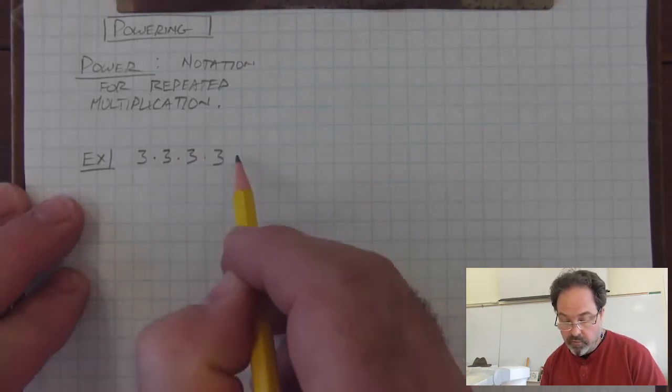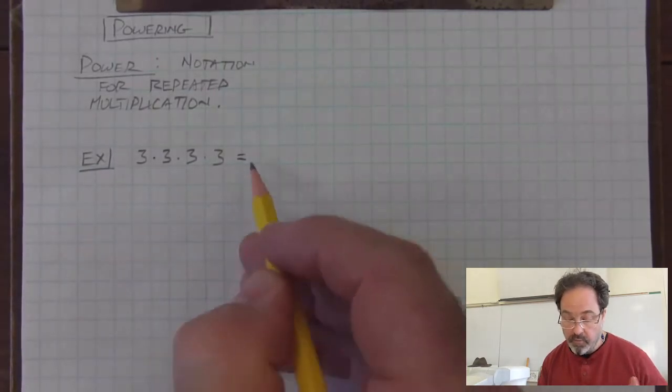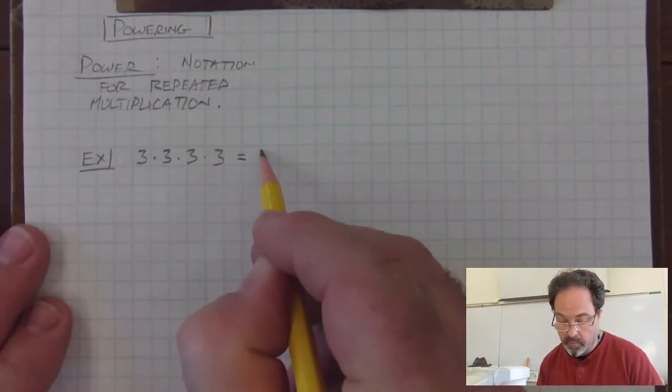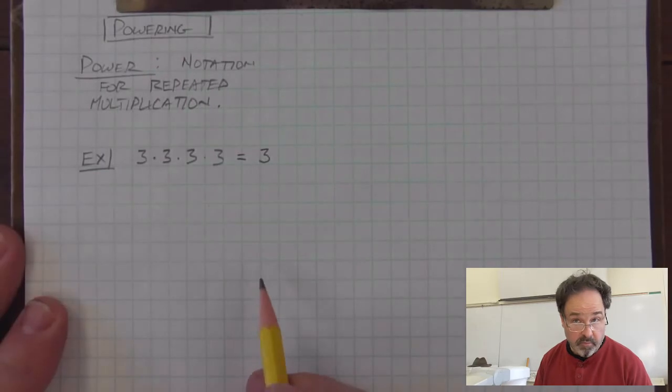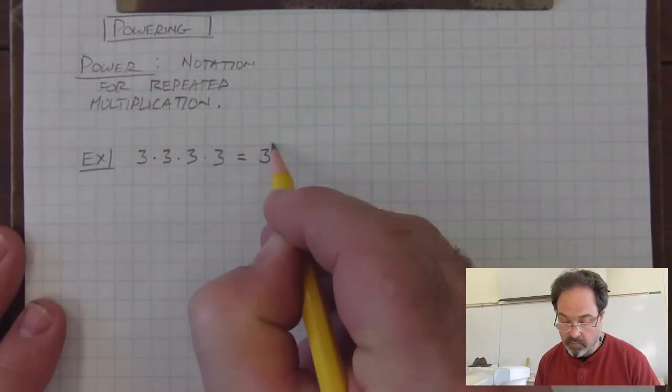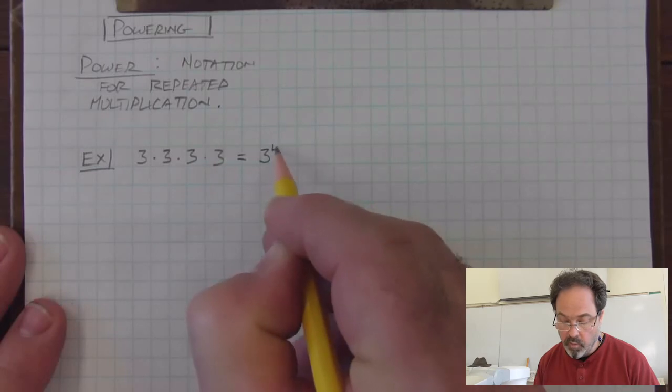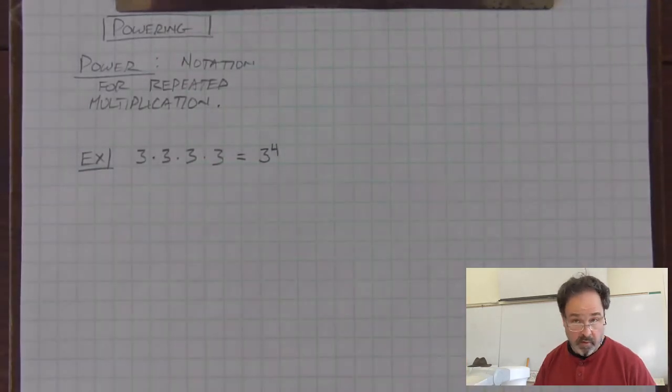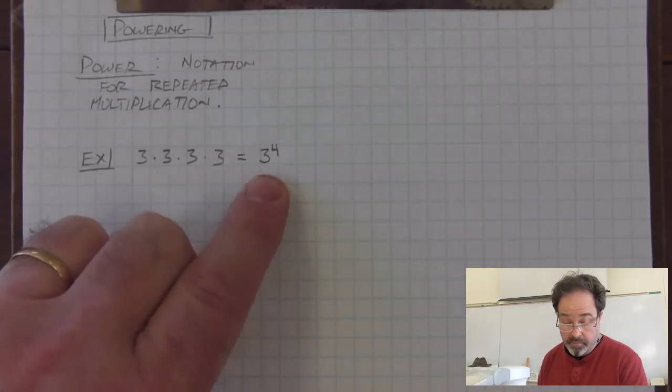We can use notation to stand for this repeated multiplication by writing the number that's going to multiply and then, at the top right with a smaller number, write the number of times that we multiply that number. And when we write repeated multiplication this way, we've made a power.